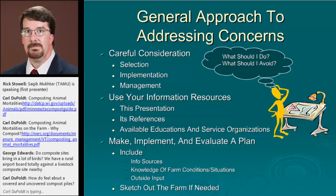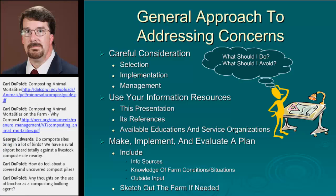The general approach to addressing these concerns — and this applies not just to mortality composting facilities but also to other things — really boils down to two questions: What should I be doing and what should I avoid doing? To answer those two questions, it takes careful consideration of your options, selecting between those options, implementing the chosen option correctly, then managing it so you achieve the full benefits and avoid what you're trying to avoid. That means you need information, and for today's subject we are presenting information in this webcast. A reference to the proceedings available from Langston University for the composting workshop is in your chat box.